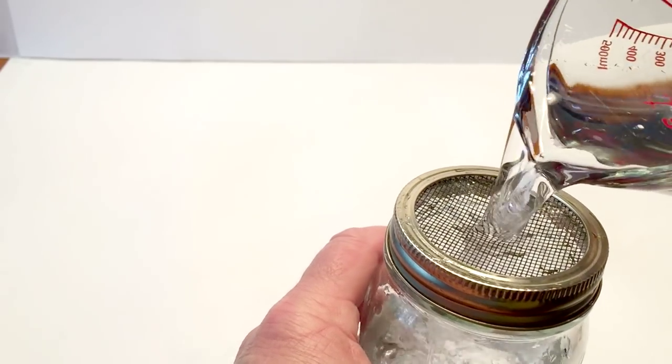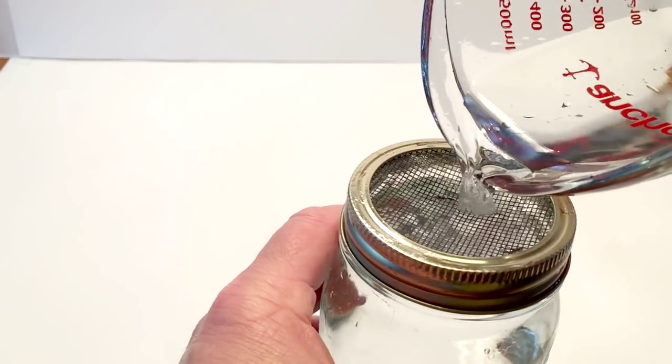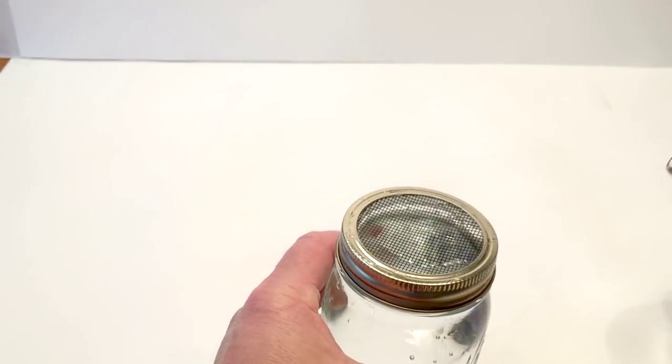Then we're going to pour the water in that we did before, so you didn't see the screen. And this is going to help us get the surface tension that we require when we flip it over.